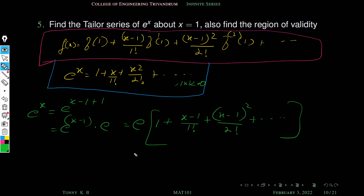What about e^(x−1)? We know that e^x has a Maclaurin series expansion valid for all real numbers whenever mod x less than infinity. So we can use this Maclaurin series for e^(x−1); the only difference is that instead of x we substitute x minus 1. The series expansion of e^(x−1) is 1 plus (x−1) over 1 factorial plus (x−1)^2 over 2 factorial plus etc. This is the Taylor series expansion of e^x about x equal to 1, since it contains terms x minus 1 and its powers.